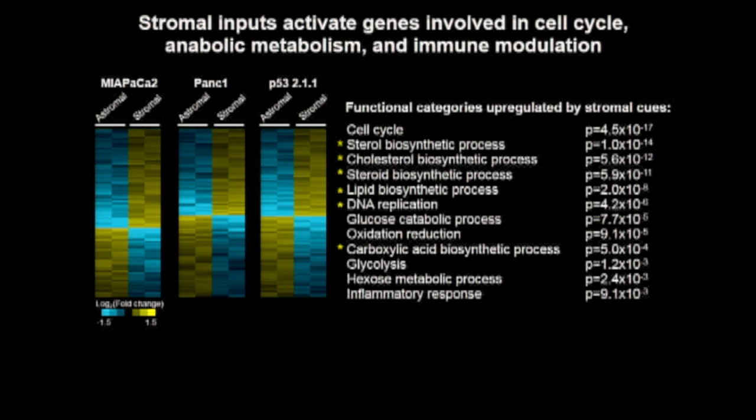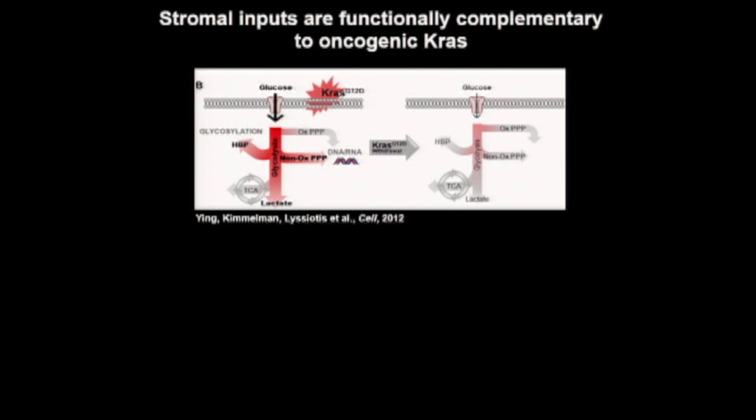This was accompanied by upregulation of genes involved in catabolic processes like glycolysis that can generate metabolic intermediates for use in anabolic pathways. When I first saw these gene categories and the specific gene identities on this list, it was reminiscent of a paper from Lou Cantley and Rhonda Perot's labs, in which the authors wanted to better understand the proximal functions of oncogenic KRAS in pancreatic cancer cells.